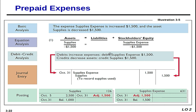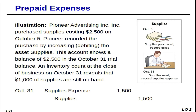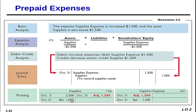Debit and credit analysis: debits increase expenses, so Supplies Expense is debited; credits decrease assets — we credit Supplies. We're transferring from Supplies to Supplies Expense. The journal entry is $1,500 debit, $1,500 credit, then posted to the ledger. Supplies started at $2,500, adjusted down by $1,500, so the ending balance of $1,000 agrees with the physical count.